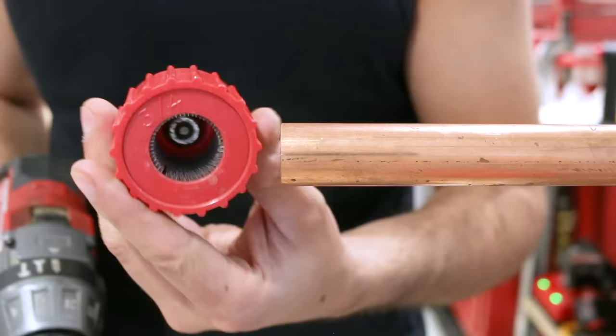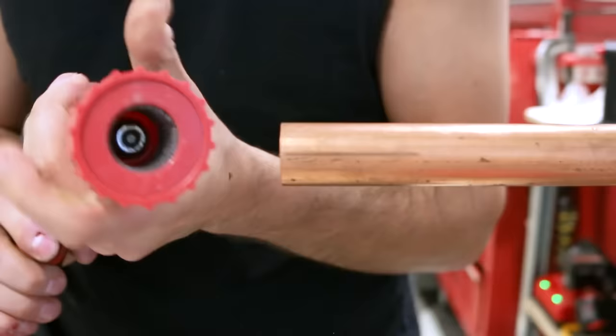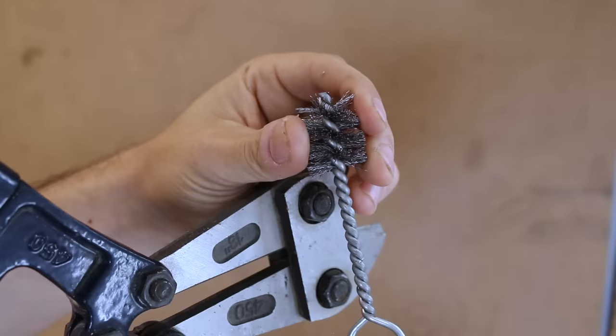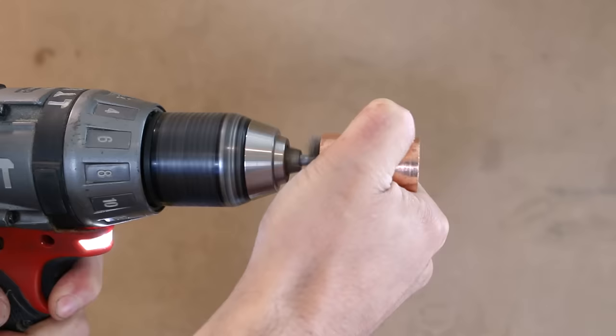A cool gadget that I use all the time now and that speeds things up is this drill attachment. Just chuck it up, insert the pipe, and brush it in under three seconds. Neat, huh? The same thing could be done with your fitting brush. Just cut off the brush portion and chuck it in your drill. It'll speed things up quite a lot.